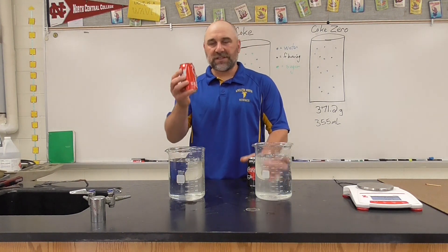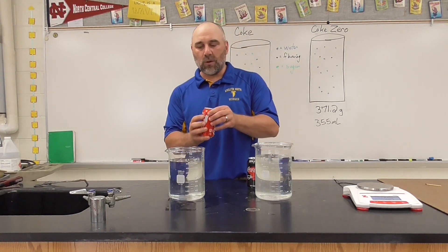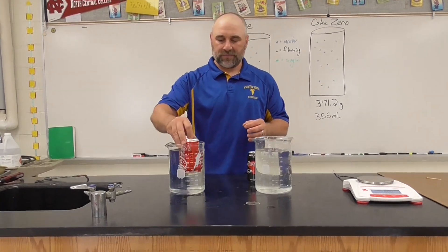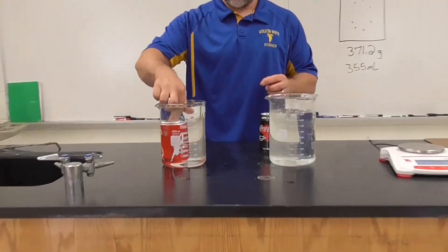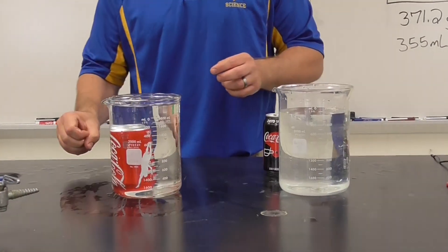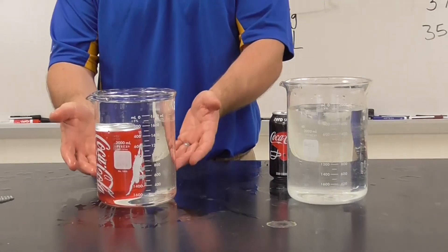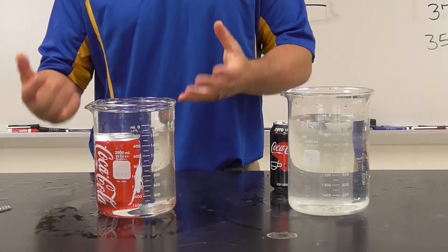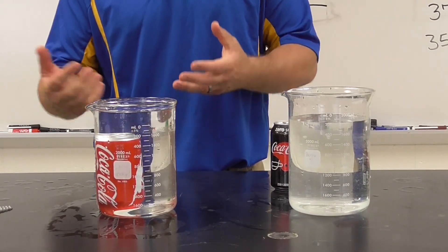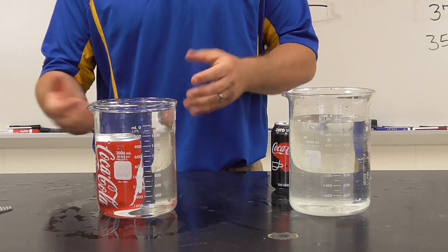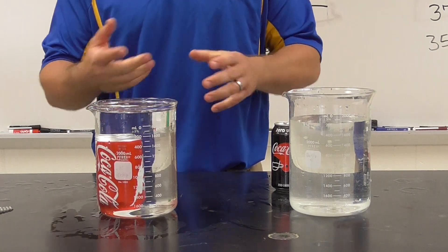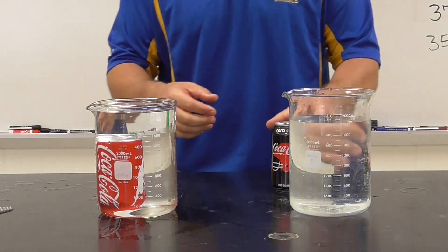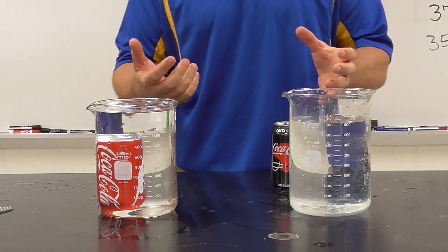So what I'm going to do first is I'm going to take this can of Coke and see if it's more or less dense than water. I'm going to place it in and see what happens. You can see that it goes to the bottom, meaning that it has a greater density than water — more mass per unit of volume than water does. Recall water has a mass per unit of volume of roughly 1.0.